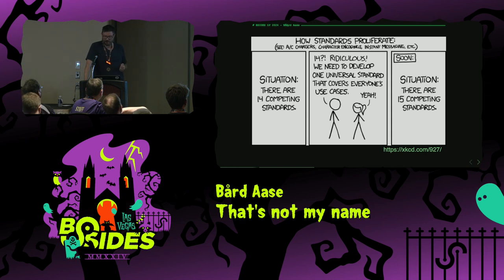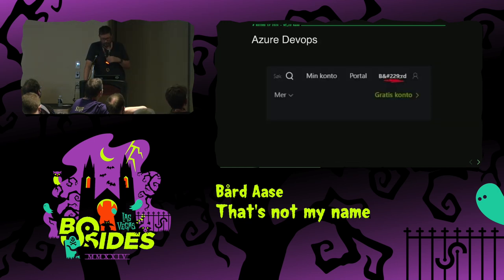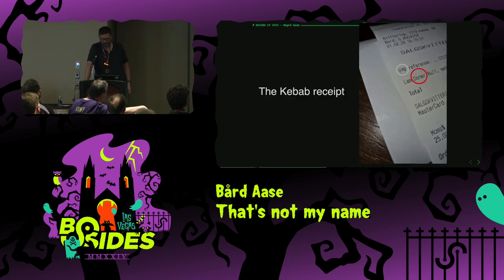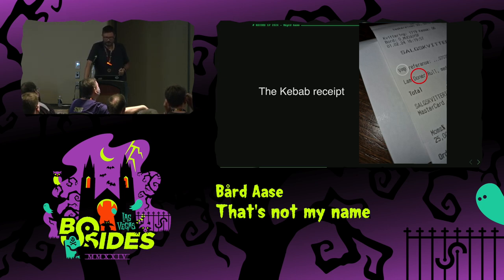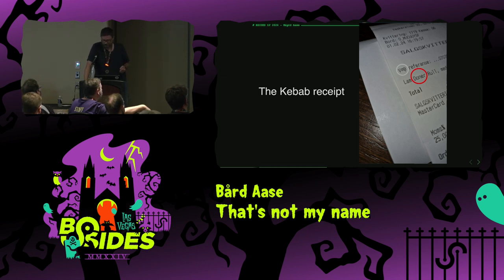IANA, the Internet Assigned Numbers Authority, currently recognizes 259 standardized character sets. To this day, Azure DevOps still misrenders my name on its front page. A couple of weeks ago I had a kebab at my favorite kebab place. Notice how they omitted the umlaut over the Ø in Dønar, and how 'vår referanse' - that's Norwegian - is incorrectly displayed.